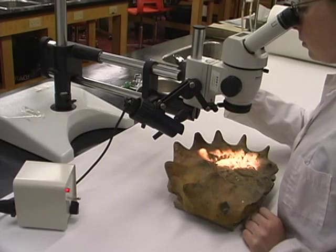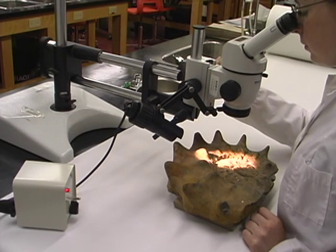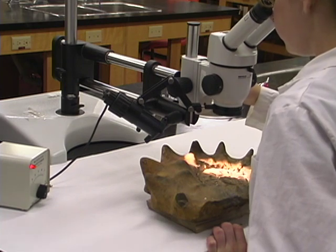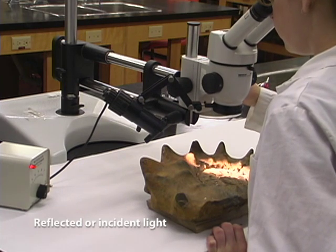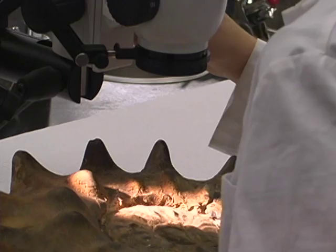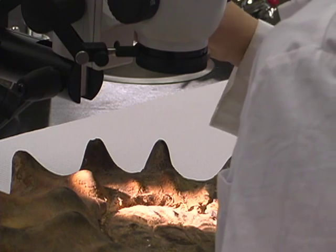If the object to be viewed is opaque, then light has to be shone on it and reflected back into the microscope. This means of illuminating an object is called reflected or incident lighting. Such lighting usually comes from above the object. A light source up high is usually the best for reducing shadows.